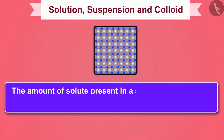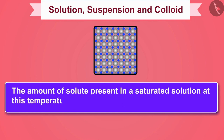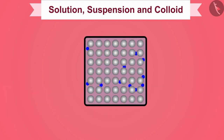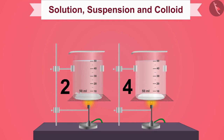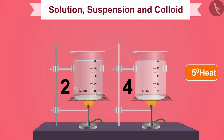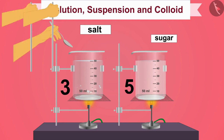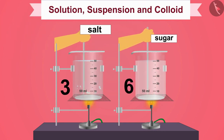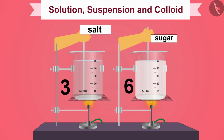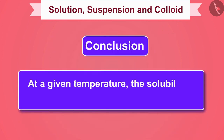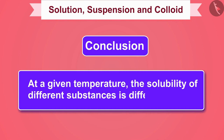The amount of solute present in a saturated solution at a given temperature is called its solubility. If the amount of solute is less than the saturation level, it is called an unsaturated solution. If we heat these two saturated solutions by 5 degrees more and then try to dissolve more salt and sugar, we can see that more solute dissolves. We can conclude that at a given temperature, the solubility of different substances is different.